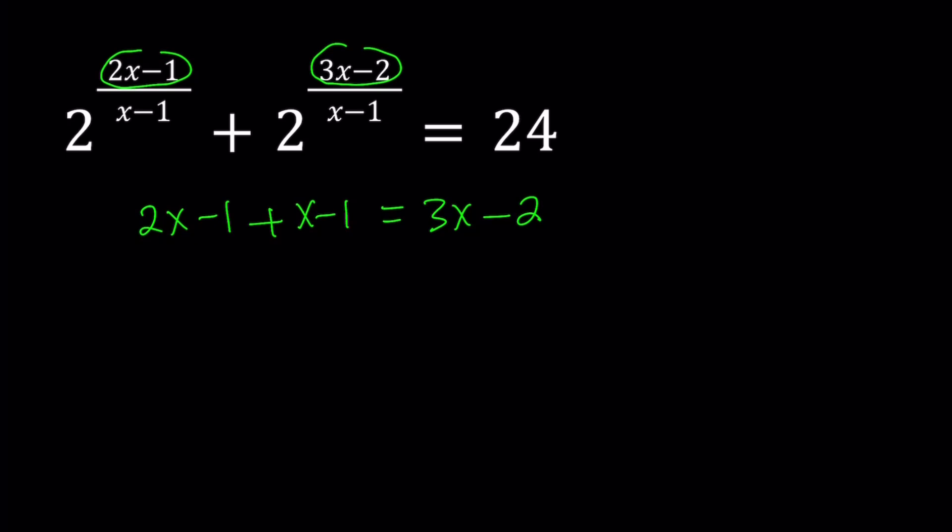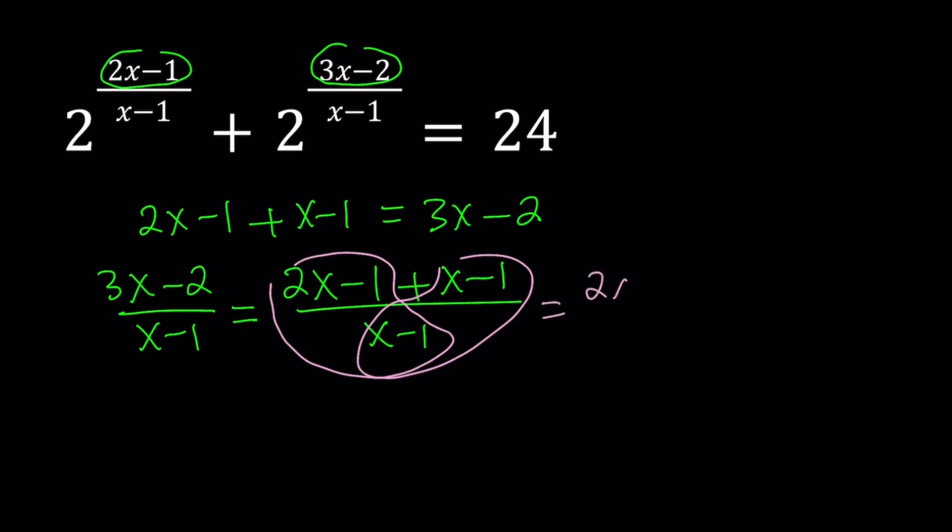Let's go ahead and write the second fraction in terms of the first one. So we're going to write this as 2x minus 1 plus x minus 1 all over x minus 1. And now notice that we can separate these into two fractions, and x minus 1 over x minus 1 is 1.